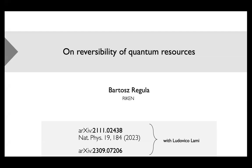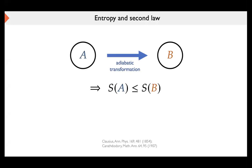To understand what reversibility means in this context, we have to look at the second law of thermodynamics. A very basic formulation is that if you have a system undergoing an adiabatic process — a closed system with no added heat — then the entropy cannot decrease. But actually a much stronger statement can be made: in the axiomatic formalization of thermodynamics by Lieb and Yngvason, this transformation is possible if and only if the entropy does not decrease.